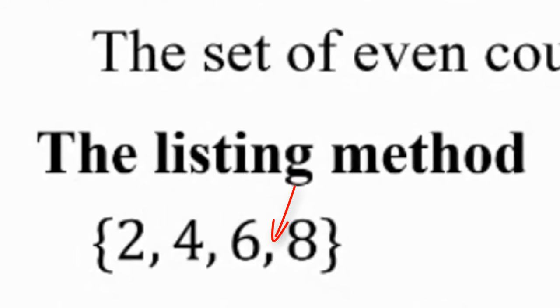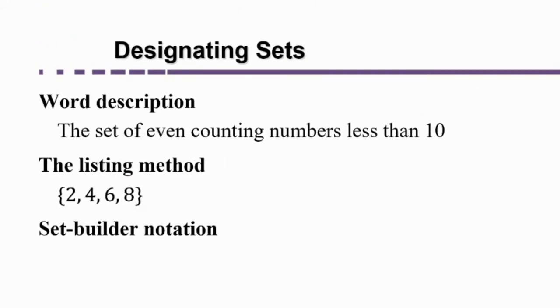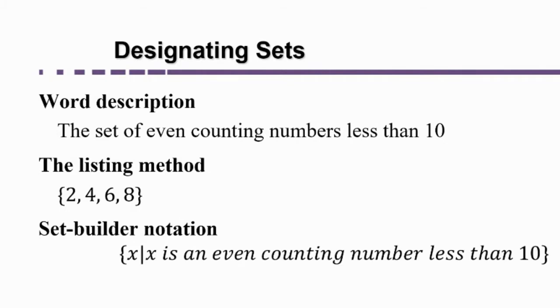Set-builder notation is going to seem a little silly at first. I promise it is useful in certain circumstances. So this is what set-builder notation looks like. It has the curvy brackets like the listing method. And then you give a name, a variable name to the elements in the set. Like here, I'm using the variable x.